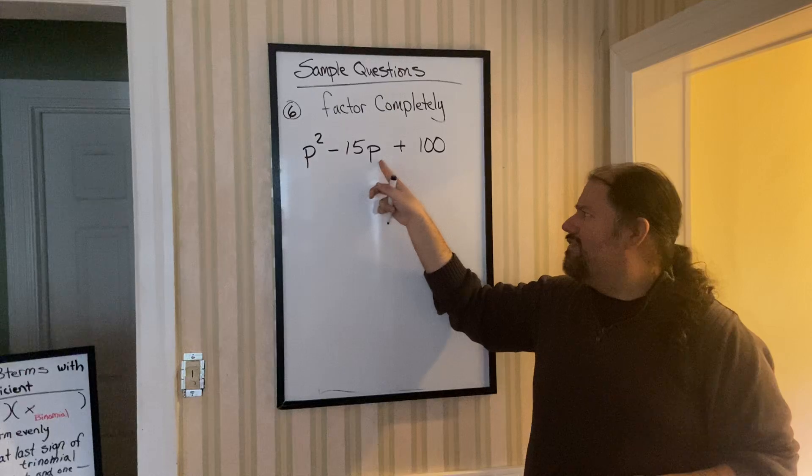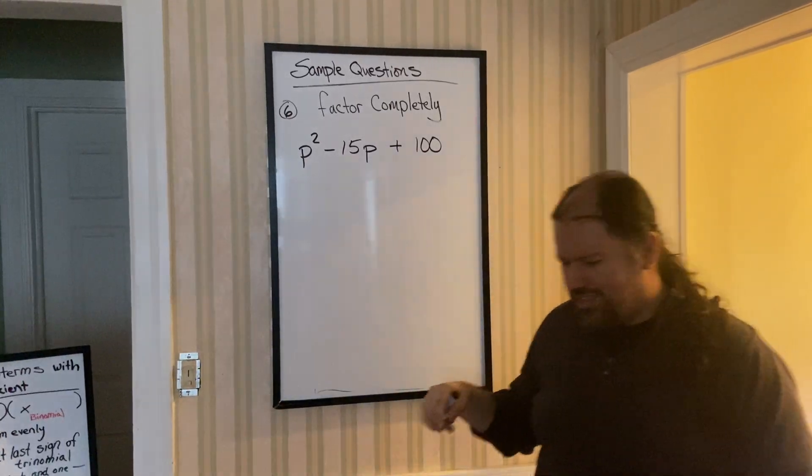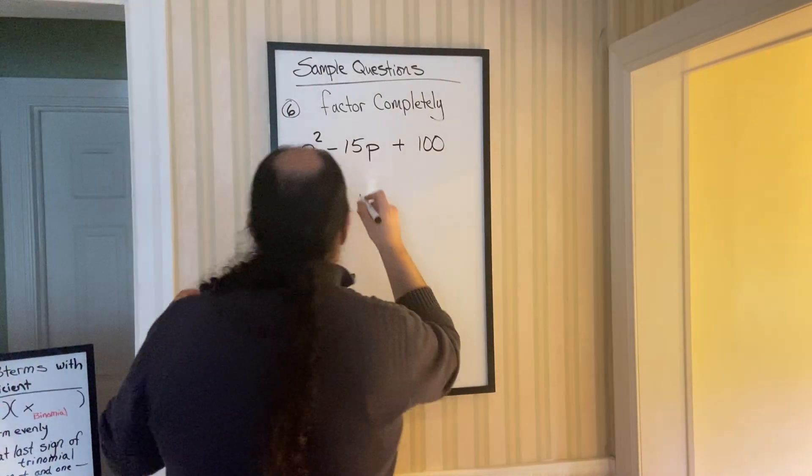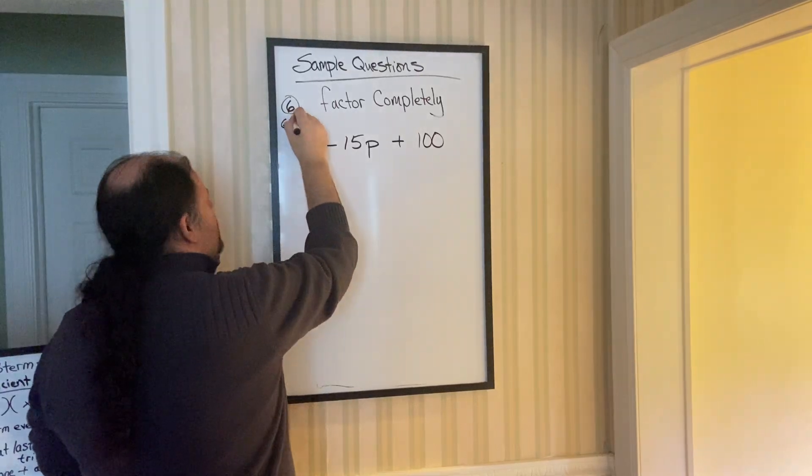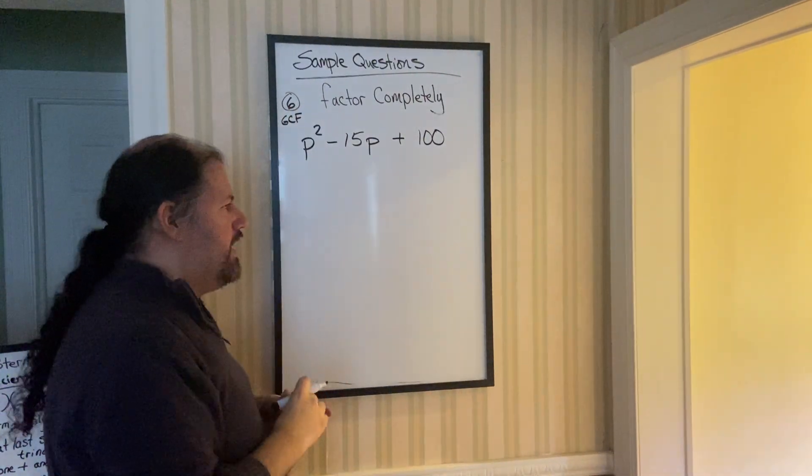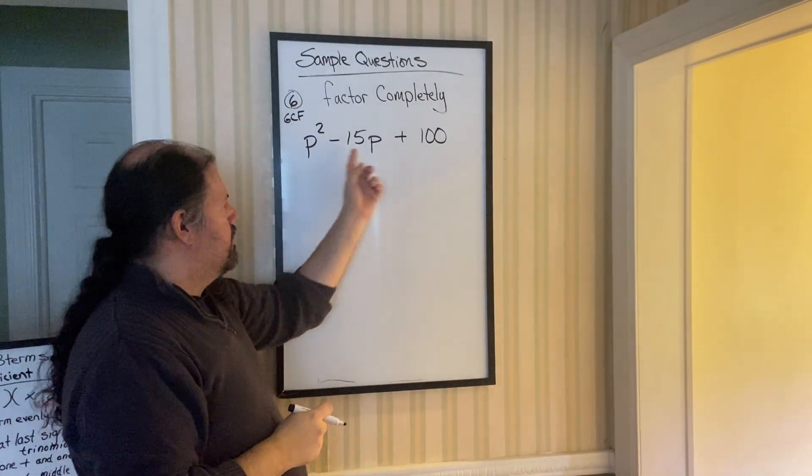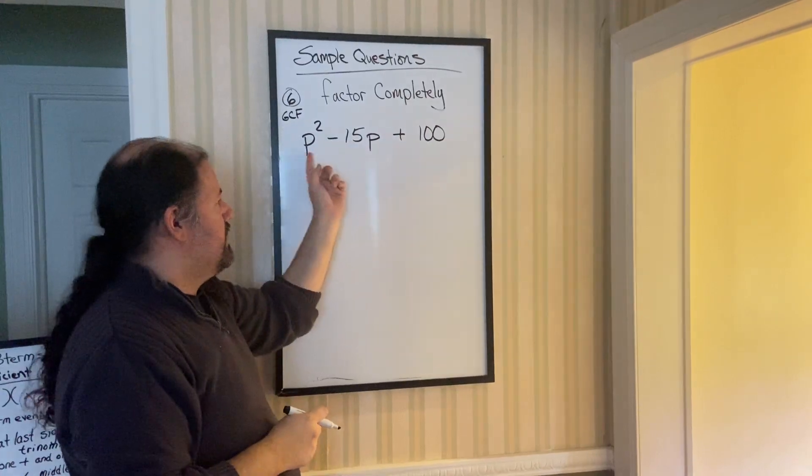So let's check. Remember, we're always looking to see if there's a GCF first. So we've got to remember, check for GCF. Go through A through D. A. Do we have the same parentheses? No.